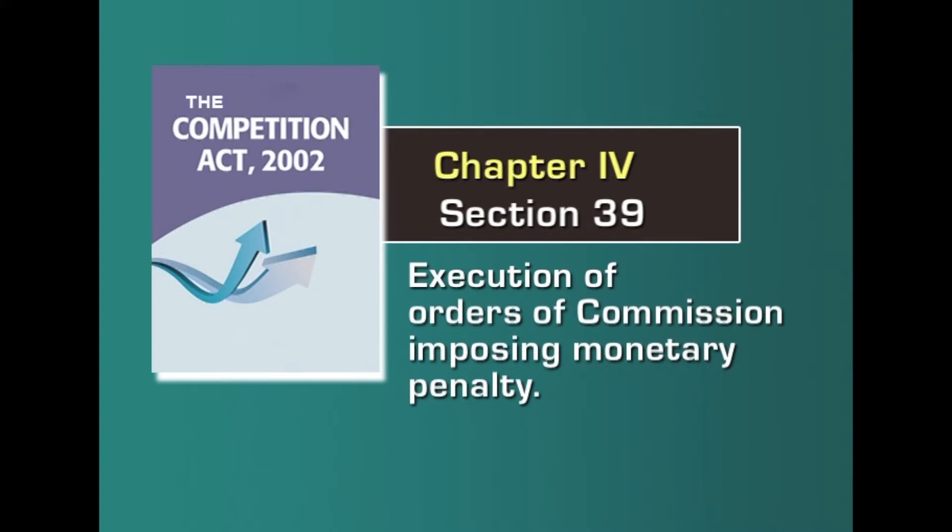Section 39 deals with execution of the orders passed by the commission, wherever it imposes a monetary penalty. In the course of our discussion, powers have been conferred upon the commission to pass various orders to regulate any activity which would adversely affect competition in India. An application under section 39 can be made for executing the orders passed by the commission.